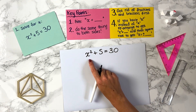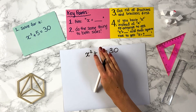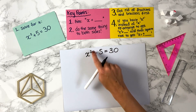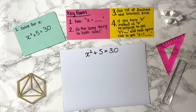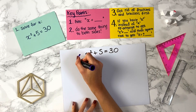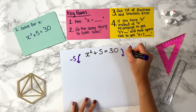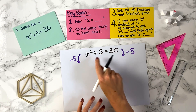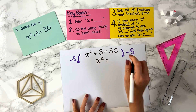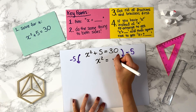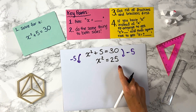If we want to get x squared on its own, on the left hand side we want to get rid of that plus 5. To get rid of the plus 5, we're going to minus 5 from both sides. x squared plus 5 minus 5 just gives us x squared on the left hand side, and 30 minus 5 gives us 25.